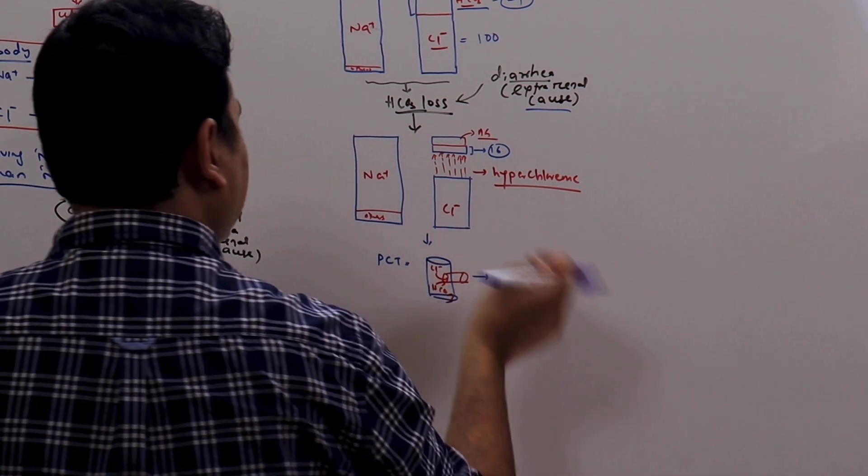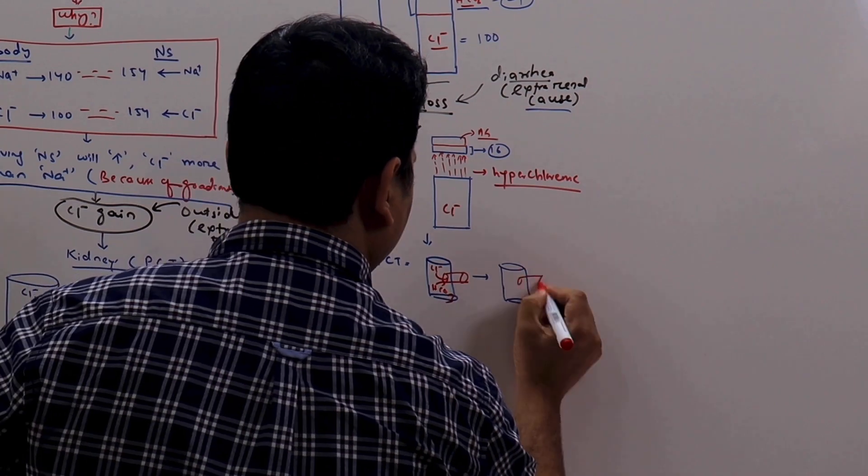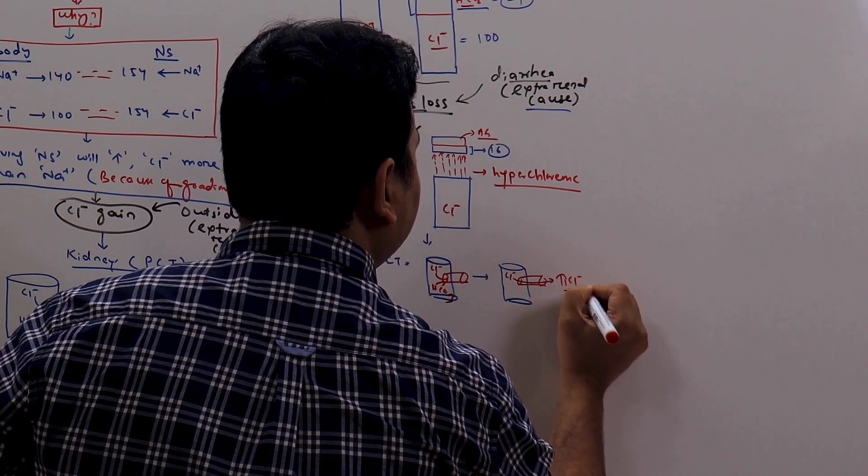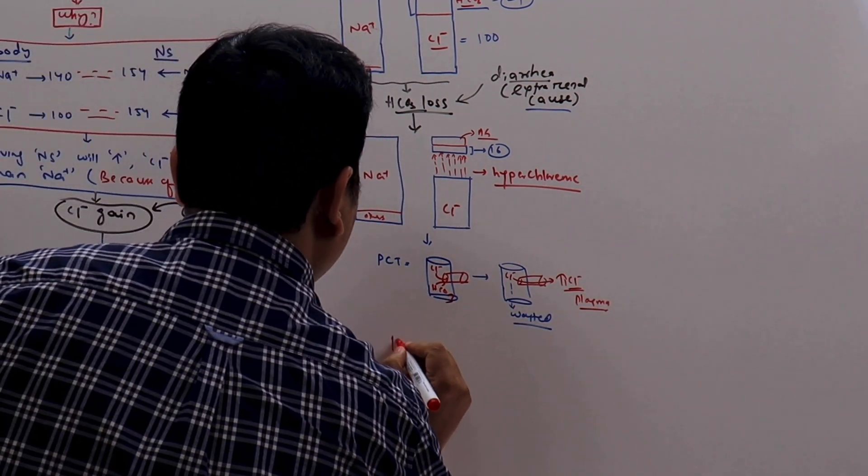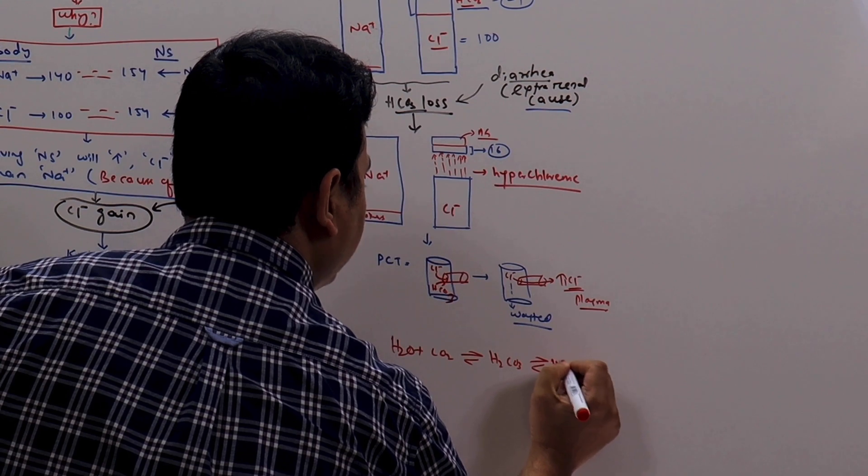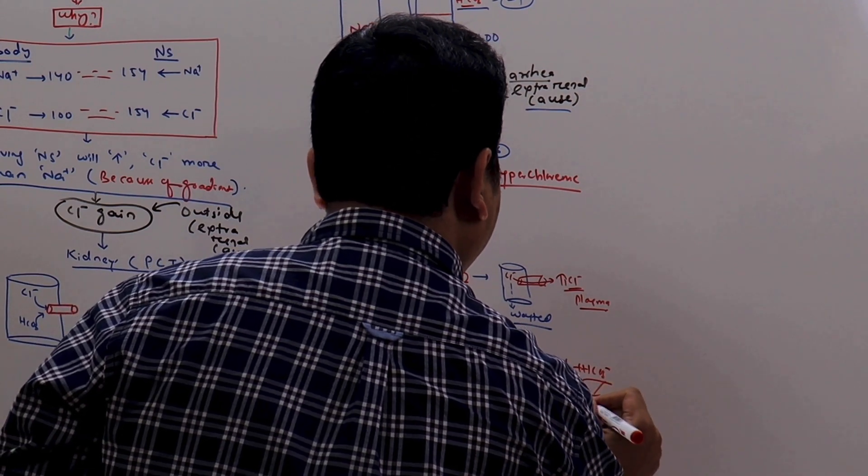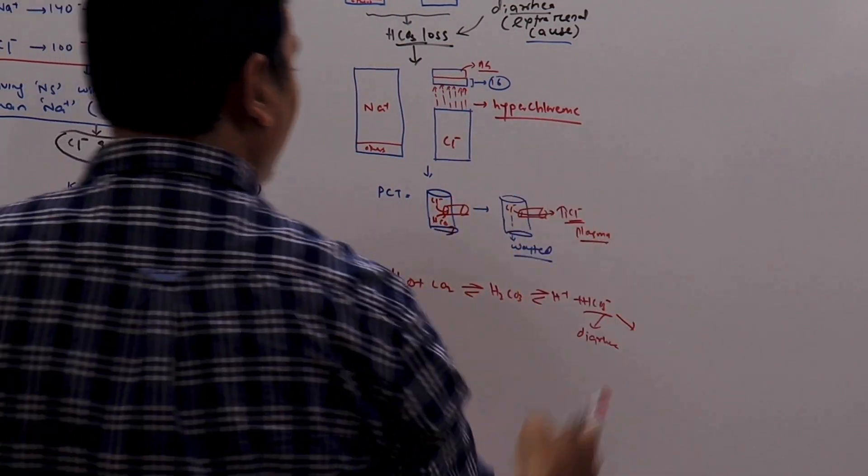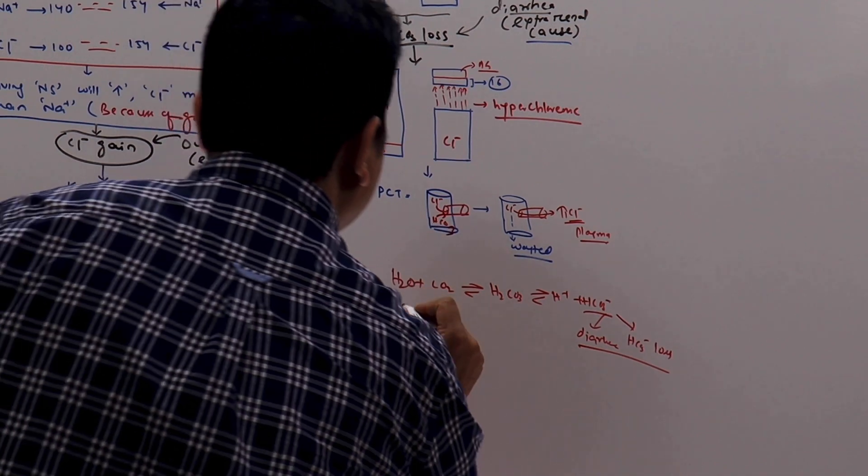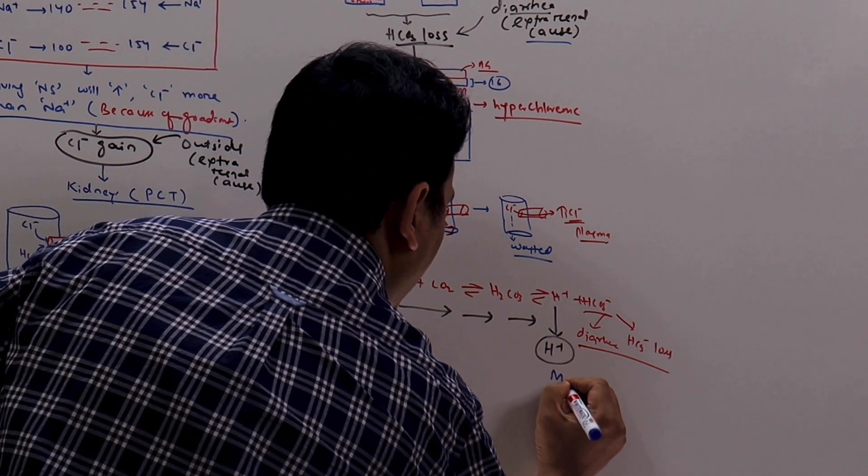In the face of a bicarb loss in the form of diarrhea, to maintain electroneutrality, the chloride is selectively reabsorbed from the proximal convoluted tubule to increase the chloride level in the plasma. Again, in the same equation, you can see the H2O plus CO2, H2CO3, H plus plus HCO3 minus. Here, what happened? Because the bicarbonate is lost in the form of diarrhea, and also because chloride is selectively reabsorbed in the proximal convoluted tubule, there is also bicarb loss causing this whole equation shift in a rightward direction, producing more H plus iron and producing acidosis.